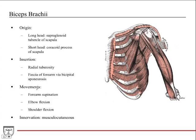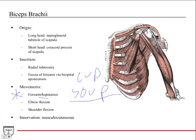The major function of the biceps is forearm supination — turning the palm from facing posterior to facing anteriorly, like holding a cup of soup. It also assists with elbow flexion since it crosses the elbow joint, and contributes to shoulder flexion due to its proximal origins crossing the shoulder joint. Innervation is musculocutaneous, as it's in the anterior compartment.